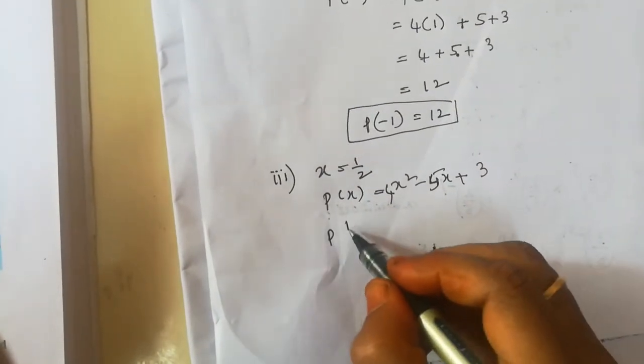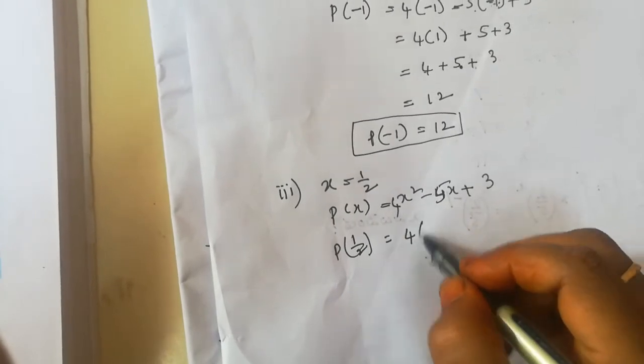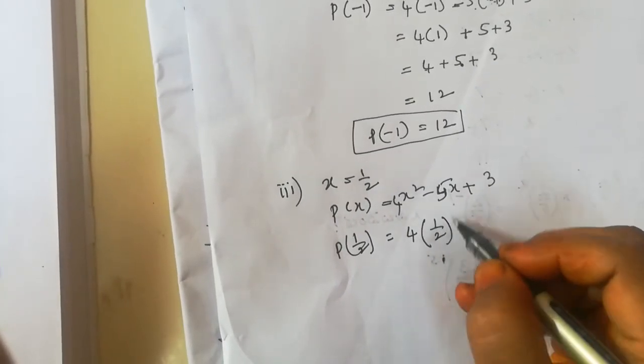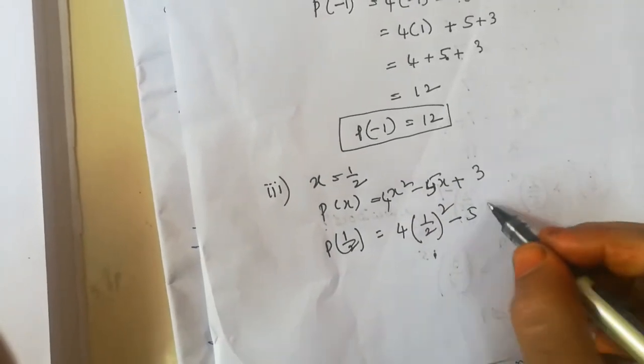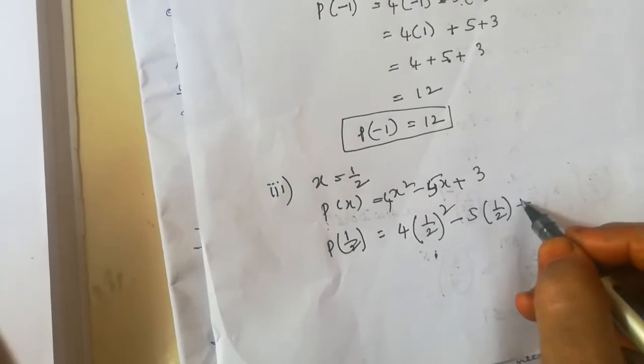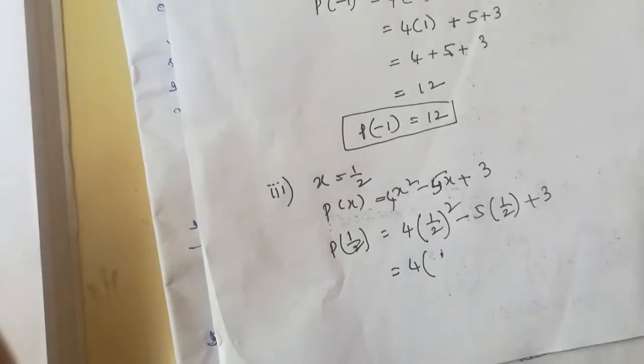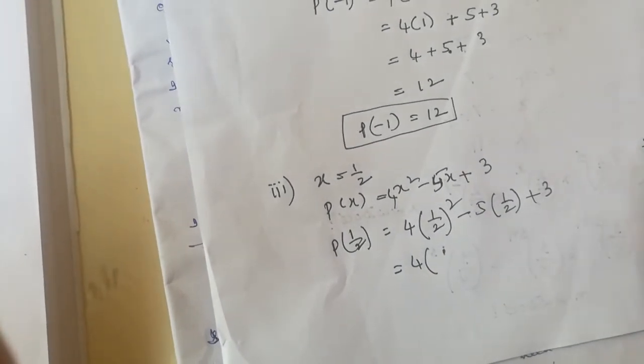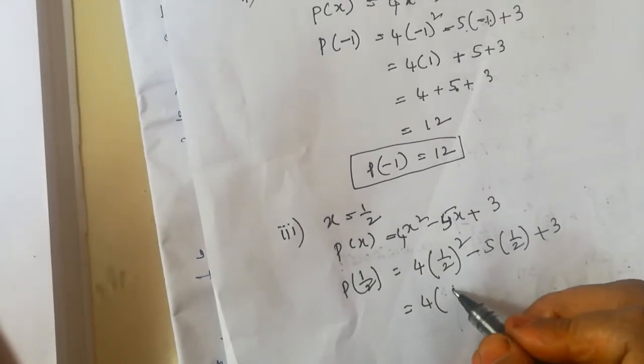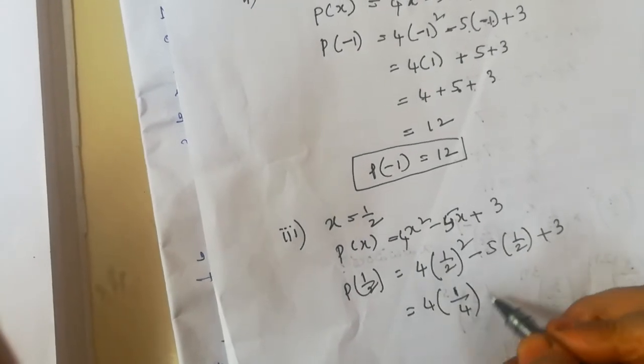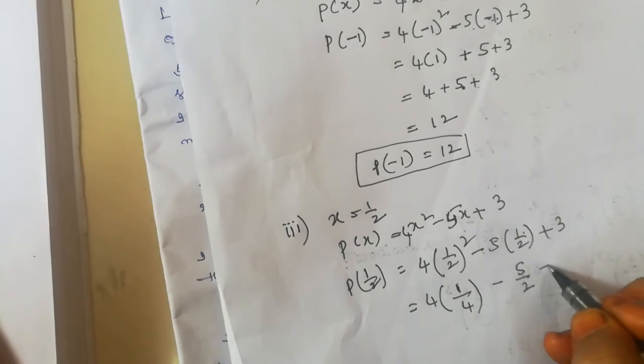So 4 times (1/2) squared minus 5 times (1/2) plus 3. One-half squared is 1/2 times 1/2, which gives 1/4. This becomes 1/4 minus 5/2 plus 3.